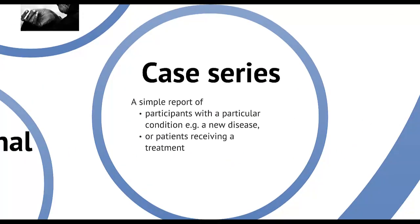A case series is a report of several cases who are followed over time. The cases might be people with a particular condition, or people who have received a particular treatment. It will give information on how these patients progress, or what the failure rate is of the intervention. The really important thing is that there is no control, and therefore we cannot say whether one intervention is better than another, or whether people without a particular condition might also have progressed in the same way.